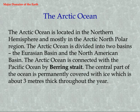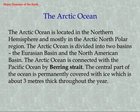The Arctic Ocean is located in the Northern Hemisphere and mostly in the Arctic North Polar region. The Arctic Ocean is divided into two basins: the Eurasian Basin and the North American Basin. The Arctic Ocean is connected with the Pacific Ocean by the Bering Strait. The central part of the ocean is permanently covered with ice, which is about 3 meters thick throughout the year.